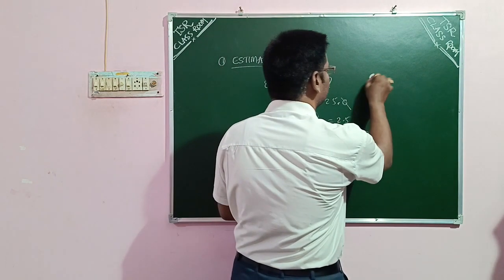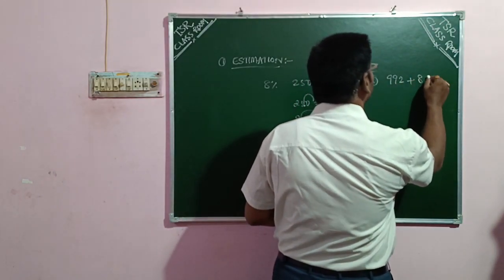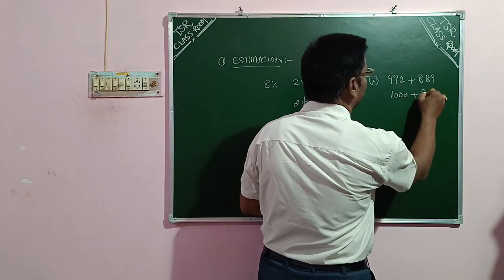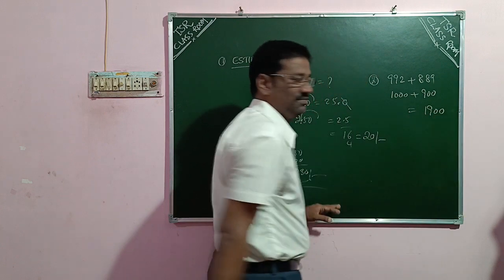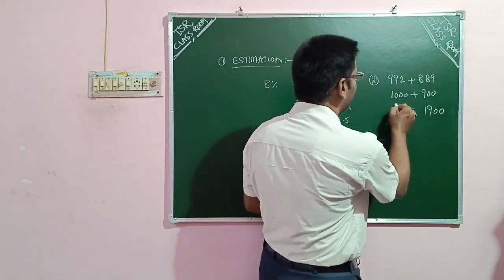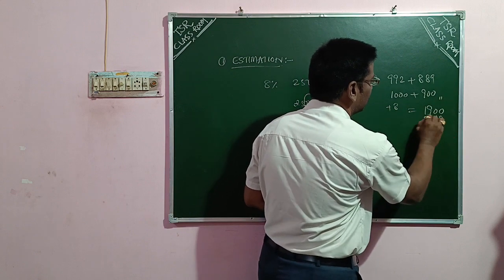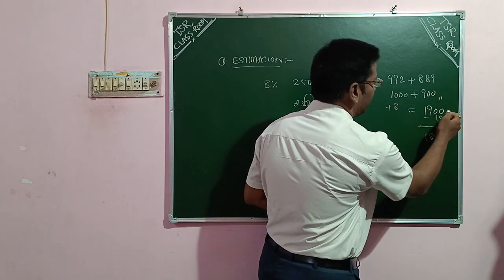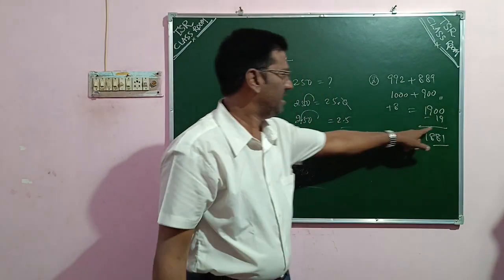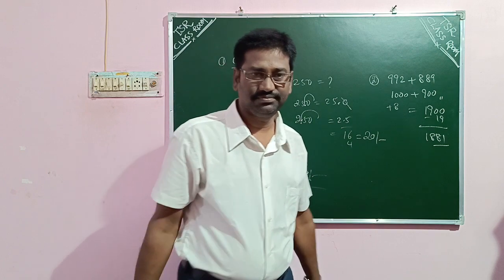Second estimation example: 992 plus 889. How much is it? Just estimate: 992 is approximately 1000, and 889 is approximately 900, so it is roughly 1900. Now for the exact answer: 1000 minus 992 is 8, and 900 minus 889 is 11, so you subtract 8 plus 11 which is 19 from 1900. 1900 minus 19 is 1881. Simple estimation.